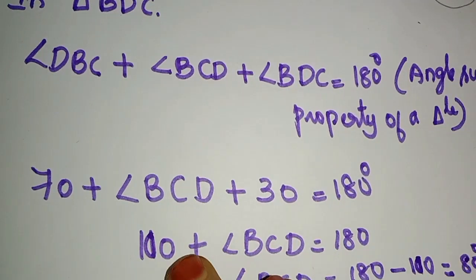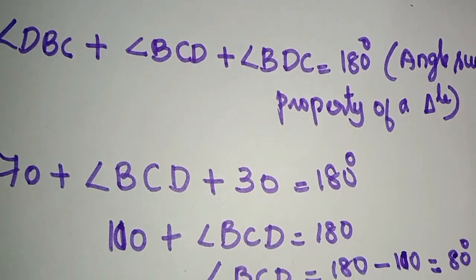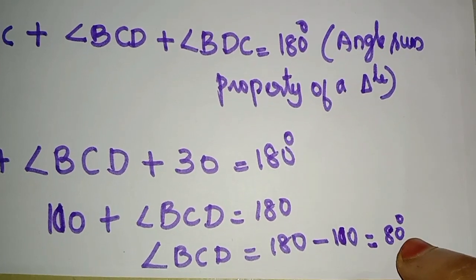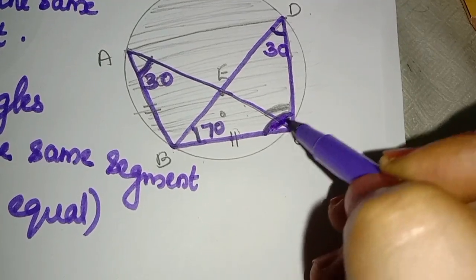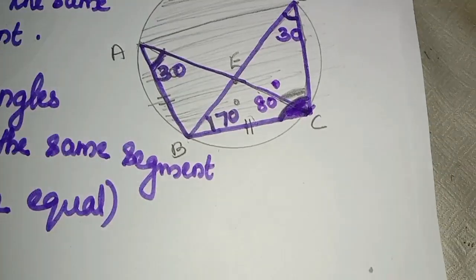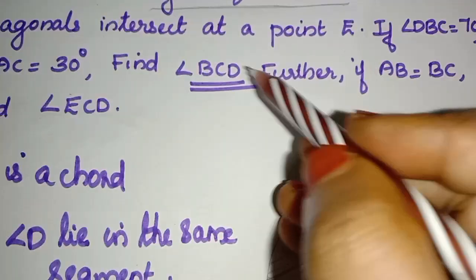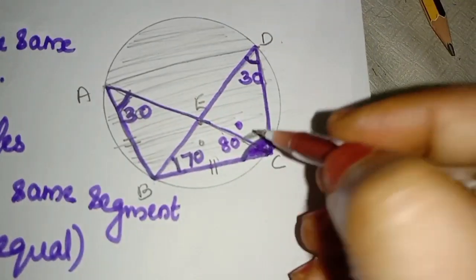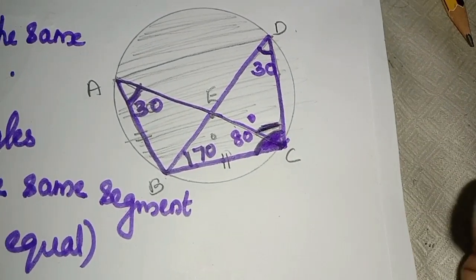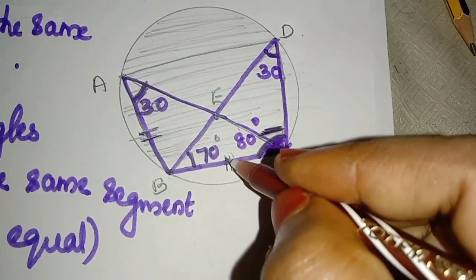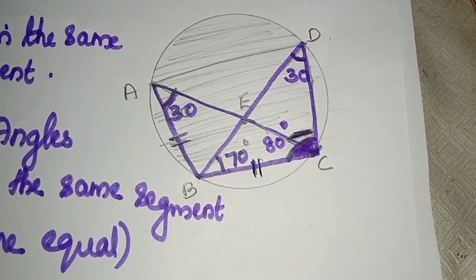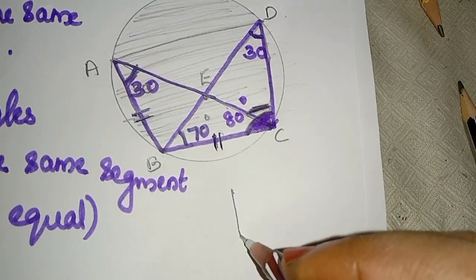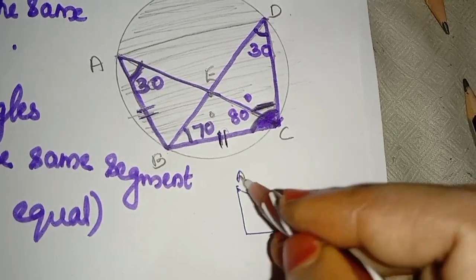So 70 plus angle BCD plus 30 equals 180 degrees. Therefore angle BCD equals 180 minus 100, which gives angle BCD equals 80 degrees.